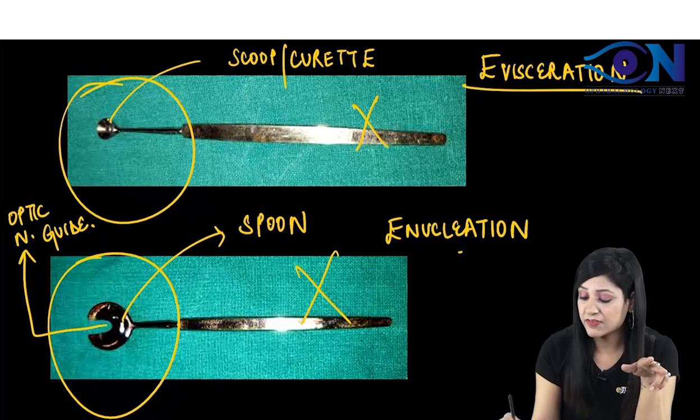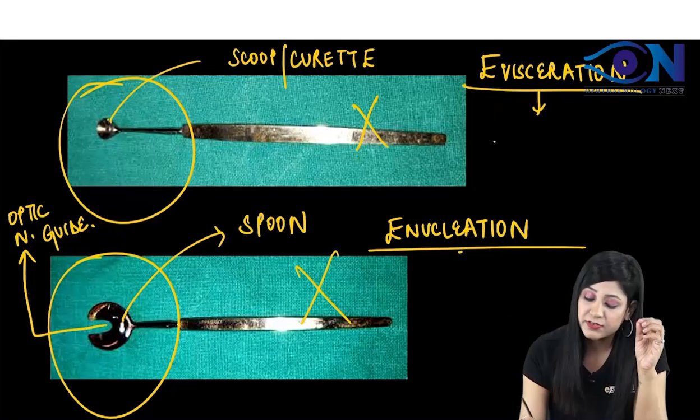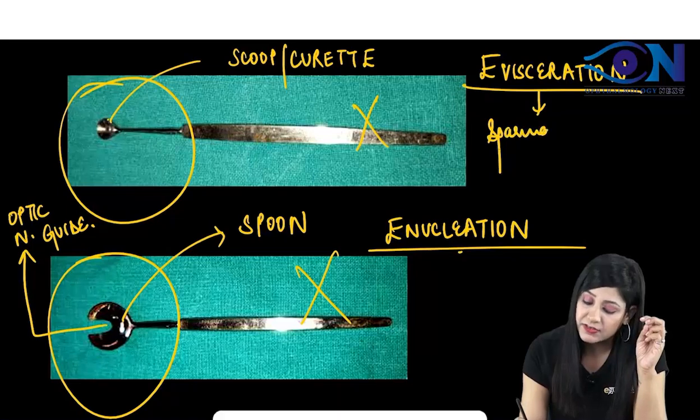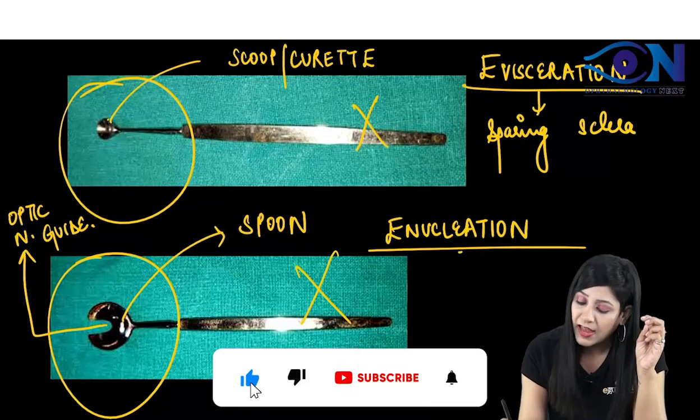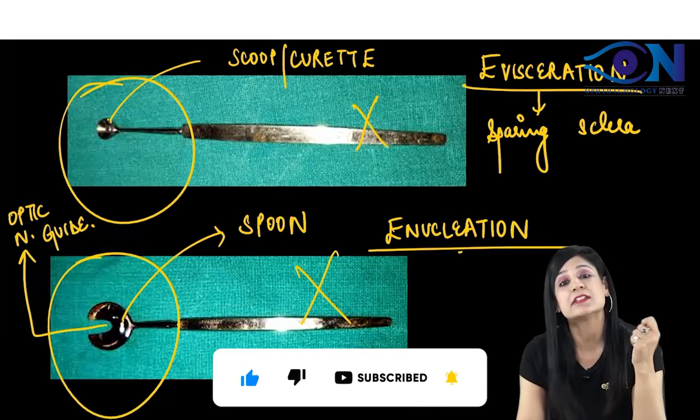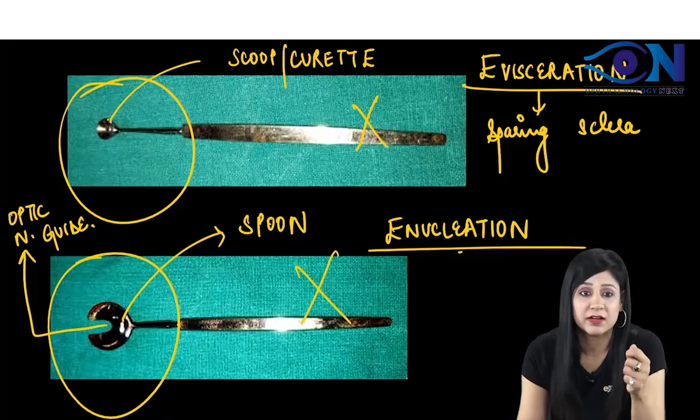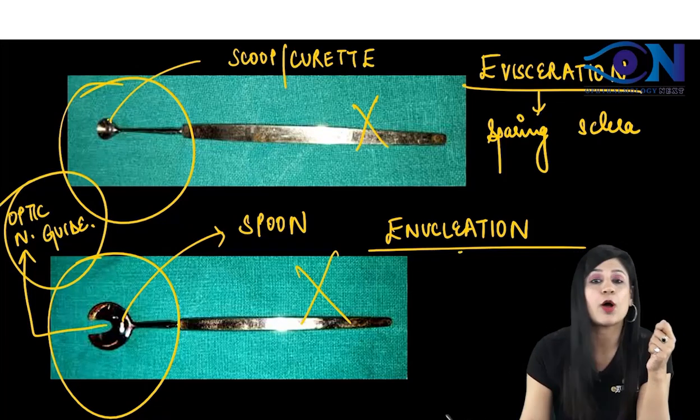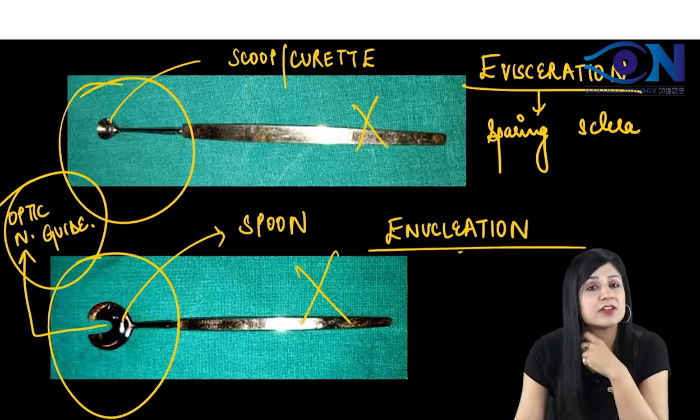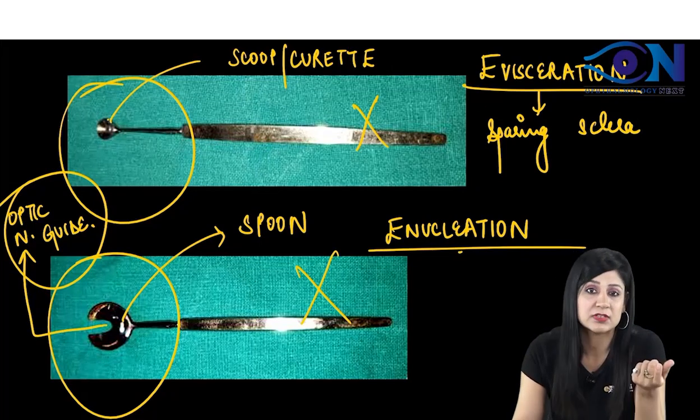Basic difference between evisceration and enucleation. In evisceration, we are sparing the sclera and just removing the contents from inside the eyeball. In cases of enucleation, we are removing whole of the eyeball along with the part of optic nerve. For that, we require the optic nerve guide. I hope you have understood the difference between evisceration, enucleation and their instruments also.